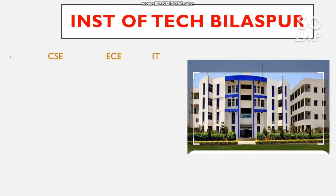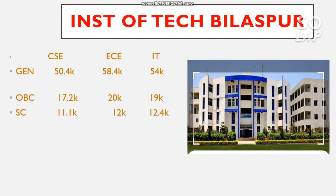The next is Institute of Technology Bilaspur. Here is the cutoff for CS, EC, and IT. For General: 50,400 (CS), 58,400 (EC), and 54,000 (IT). For OBC: 17,200 (CS), 20,000 (EC), and 90,000 (IT). For SC: 11,100 (CS), 12,000 (EC), and 12,400 (IT). For ST: 4,500 (CS) and 6,000 (EC and IT). For EWS: 9,000 (CS), 10,200 (EC), and 9,500 (IT). The first part of this video is already uploaded — you can check it for 10 more GFTI cutoffs, category-wise.